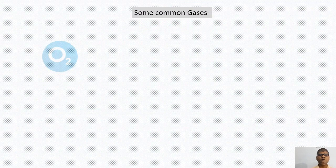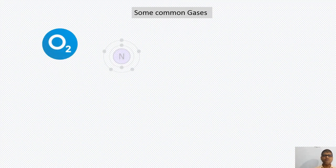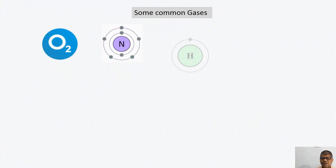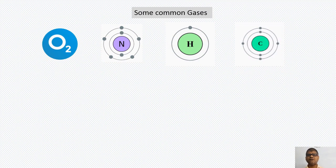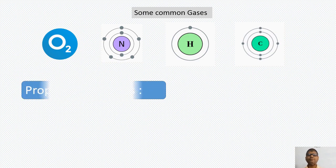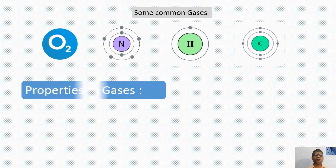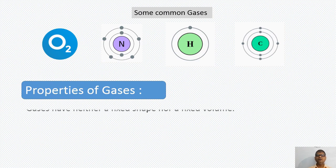Now some common examples of gases: oxygen gas, nitrogen gas, hydrogen gas, and carbon dioxide. Now let's see properties of gases.